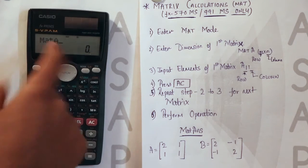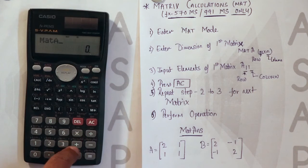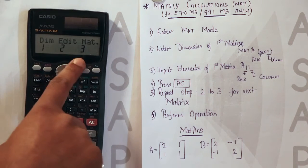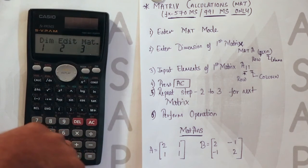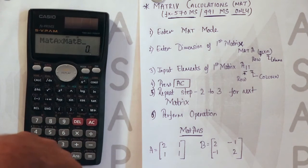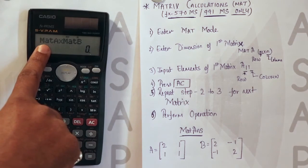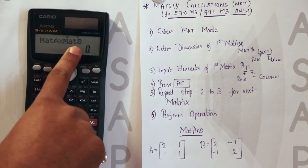Now the operation sign which you need to perform. That is either multiplication, addition or subtraction. Suppose we need to perform multiplication. Now again shift 4. Matrix we need to select. Matrix B. Now we can see matrix A into matrix B.